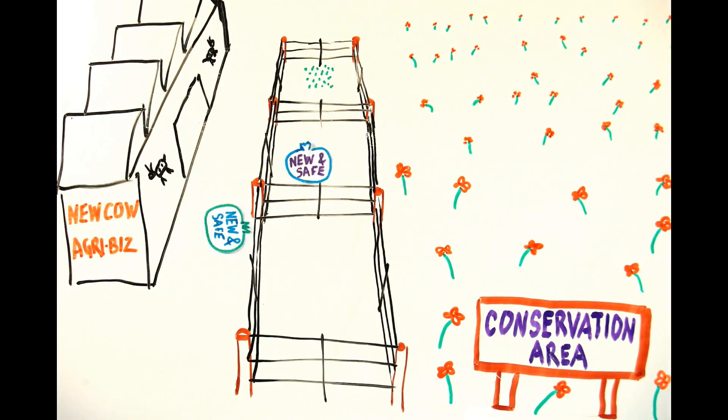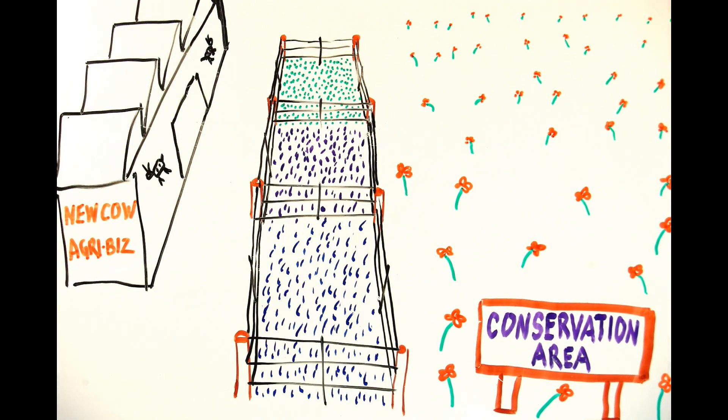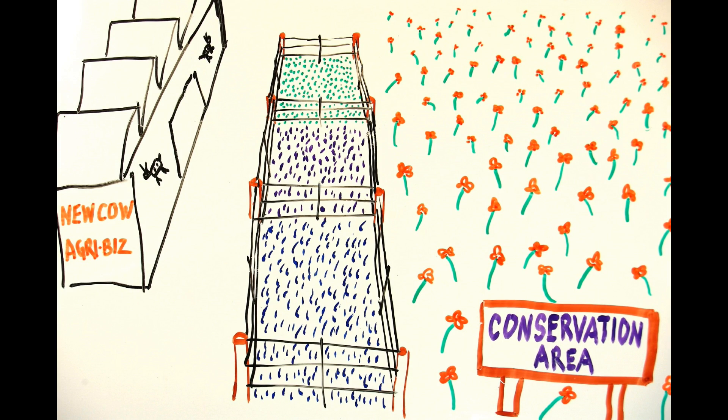Agribusiness could help by developing plants with low weed risk, and farmers could help by choosing pasture varieties with a low risk of invading natural areas.